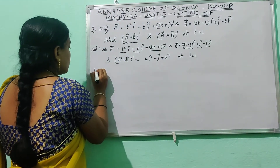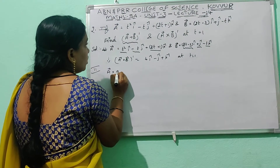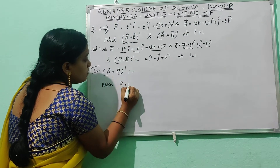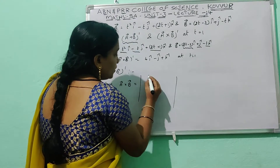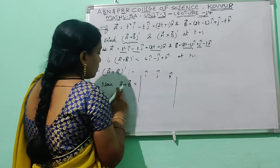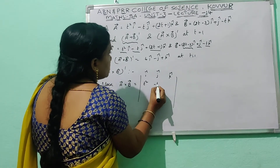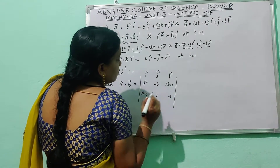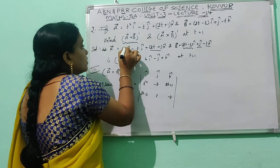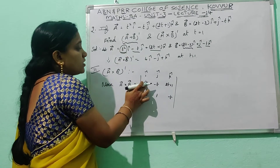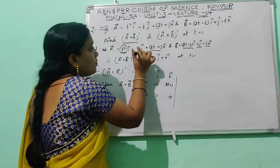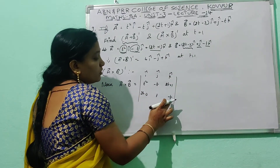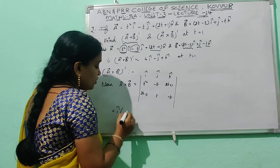Next, find the second value: (ā × b̄)'. For the cross product, we use the component determinant. The first row is î, ĵ, k̂. The second row from ā is: t², −t, (2t+1). The third row from b̄ is: (2t−3), 1, −t.